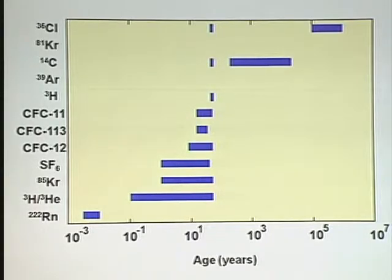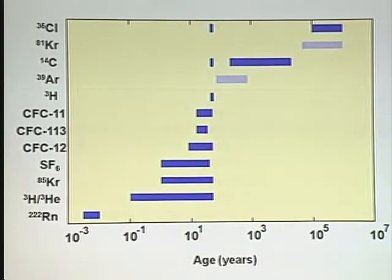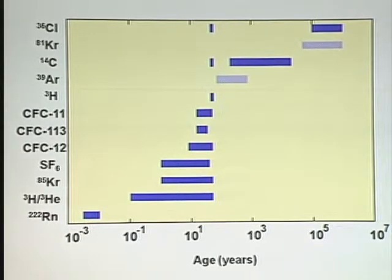You'll also notice there are some gaps in here. We have no readily available tracer that can date water from 50 to 200 years old — we can't measure age in that spectrum. There's another gap from where Carbon-14 leaves us to before Chlorine-36 comes in. There are a couple of tracers proposed for filling those gaps, but we need almost a petrol tanker full of water to make an analysis, and they're also very expensive — so they're still research tools rather than routinely available for solving hydrogeological problems.